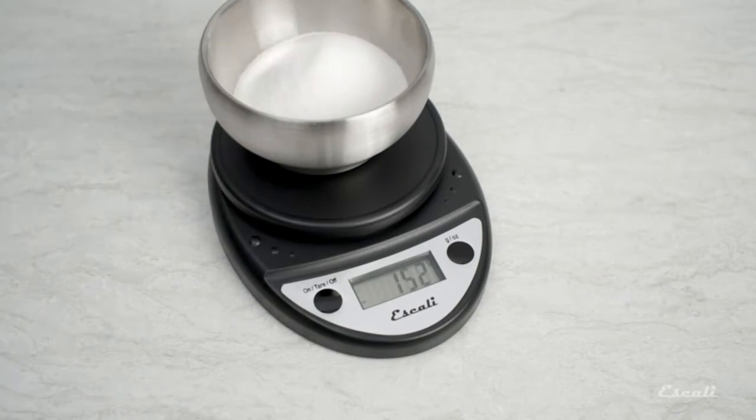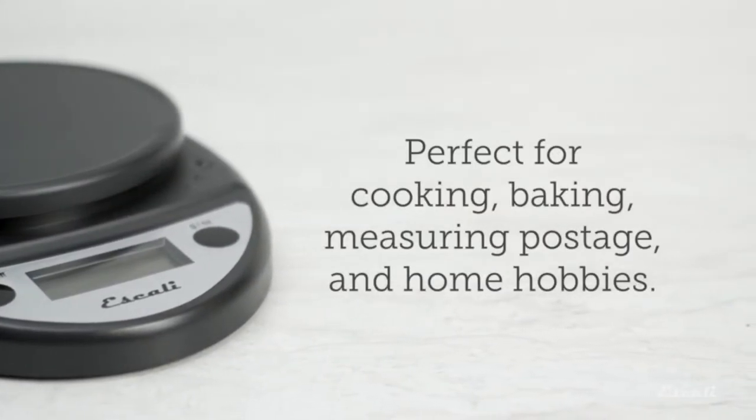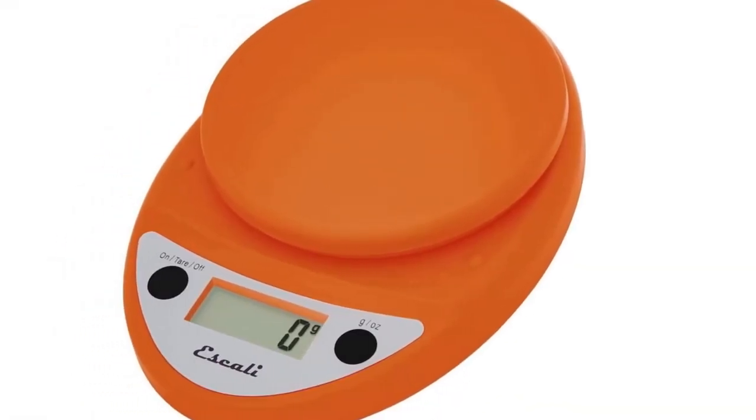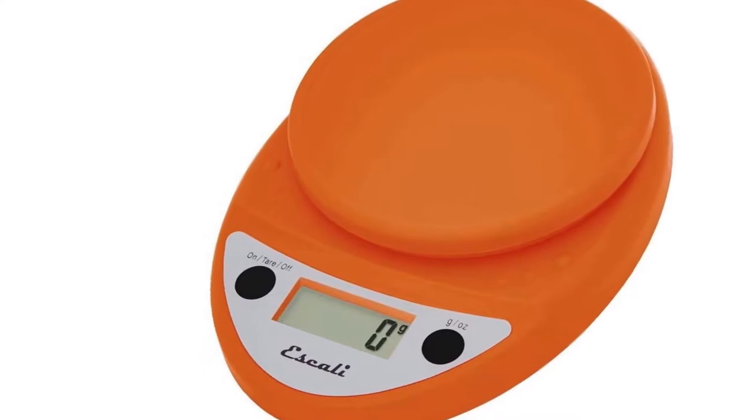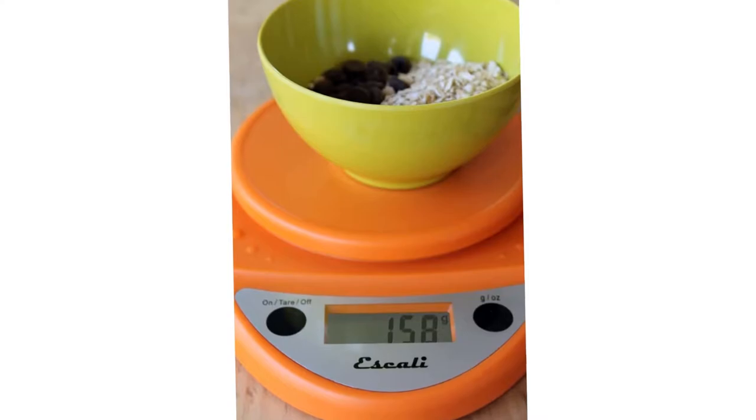The Eskali Primo Digital Scales are multifunctional and feature an easy-to-use two-button operation. The sealed control panel and rounded design make the scale easy to keep clean and very durable, available in a selection of colors. Two AA batteries are included with your scale, so you are ready to go right out of the box.